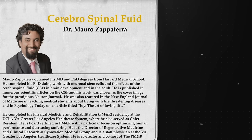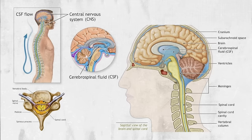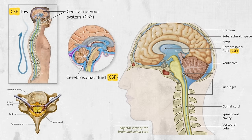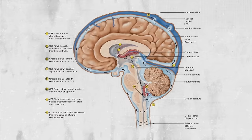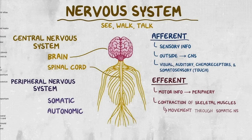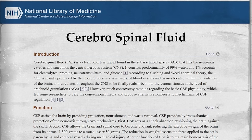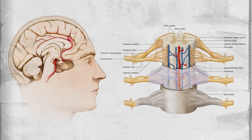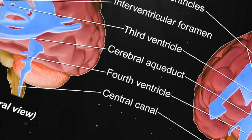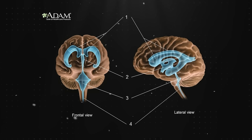What Dr. Mauro Zapaterra just mentioned is an essential component of the human body known as CSF, or cerebrospinal fluid. This remarkable fluid plays a crucial role in the functioning of our nervous system. The cerebrospinal fluid is a clear, colorless liquid that serves as a protective and nourishing agent for both the brain and the spinal cord. Residing within the brain's ventricles — cavities — it plays a vital role in cushioning these critical areas.